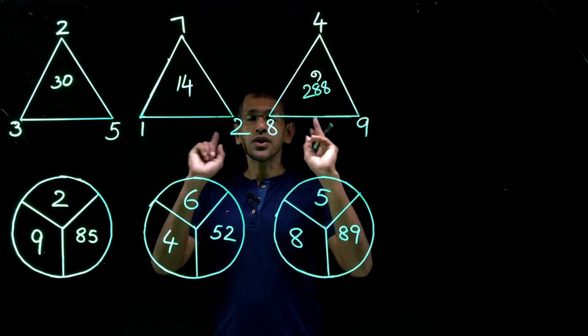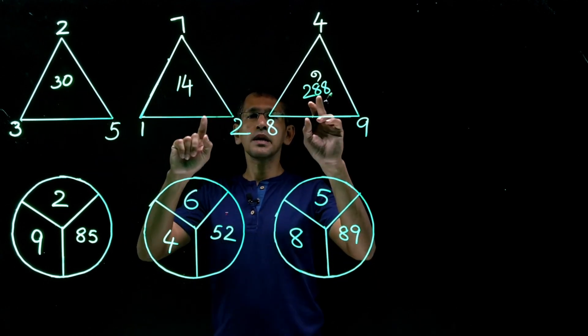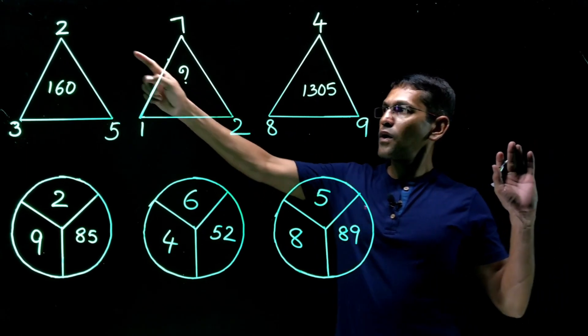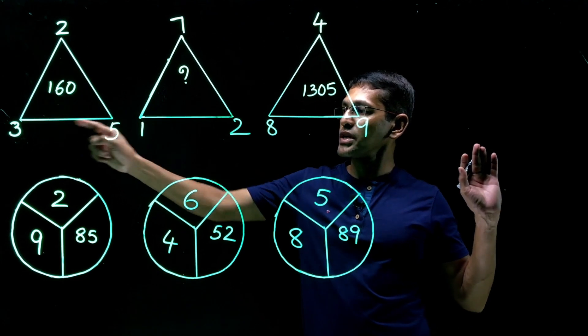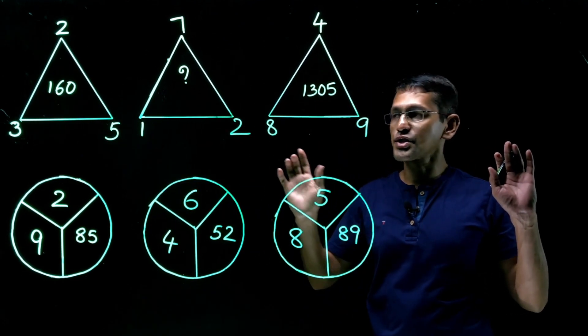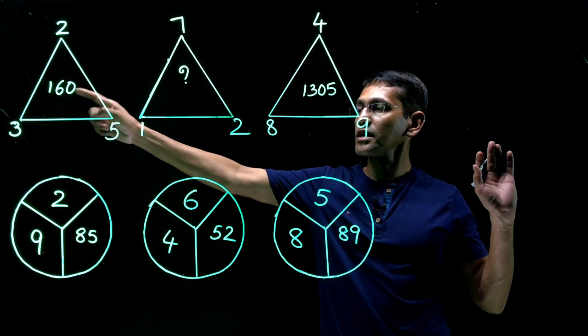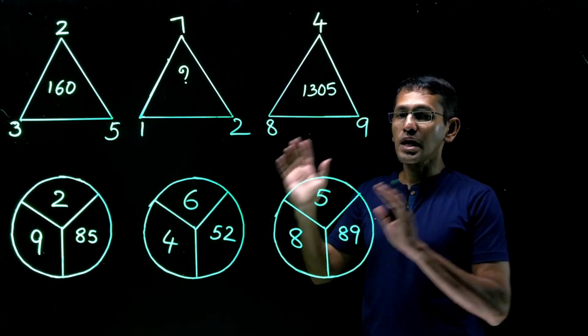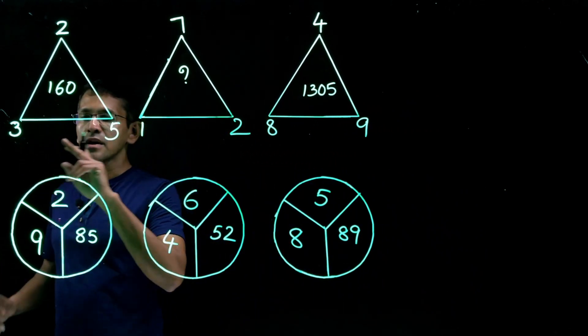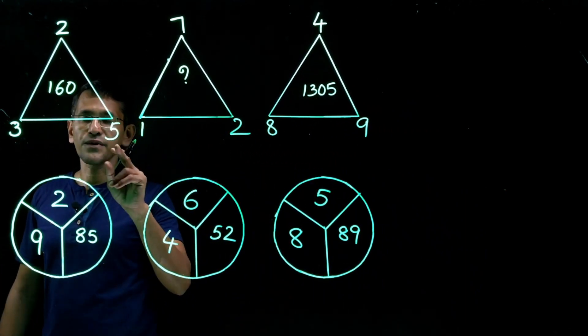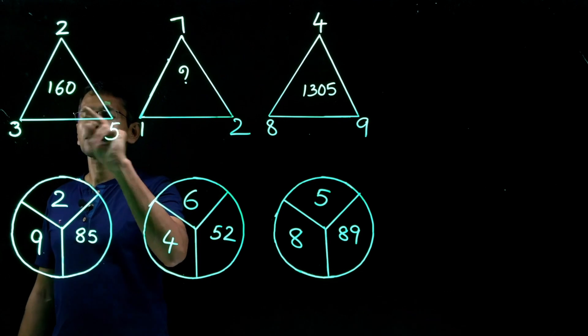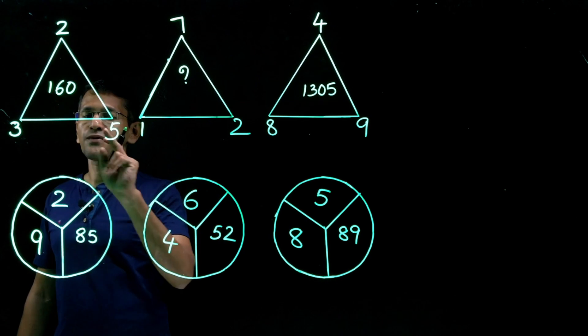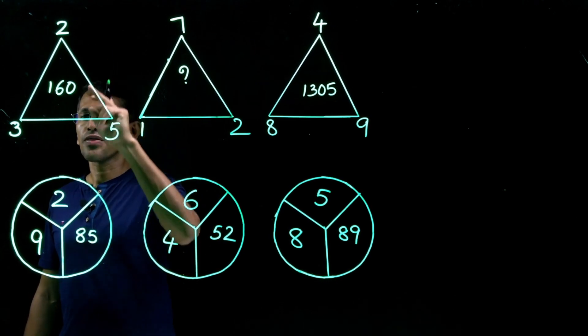Now, the third step, I'm going to change these numbers in the middle once again. As I have mentioned earlier, this is the third stage. While those numbers 2, 3, 5, those numbers are not changed. But the middle number has changed, 160 here, and this is 1305. Let's take a look at it. Earlier we had 3, 5, 3 into 5, 15, 15 into 2, 30. But this is 160. 30 into what?